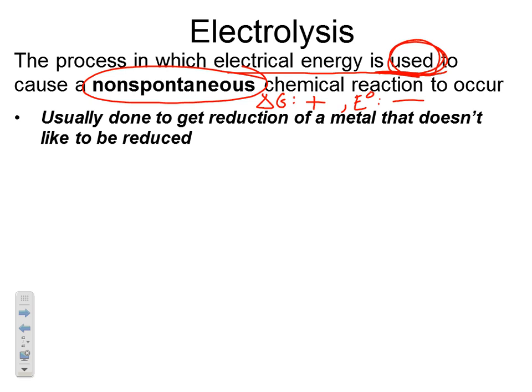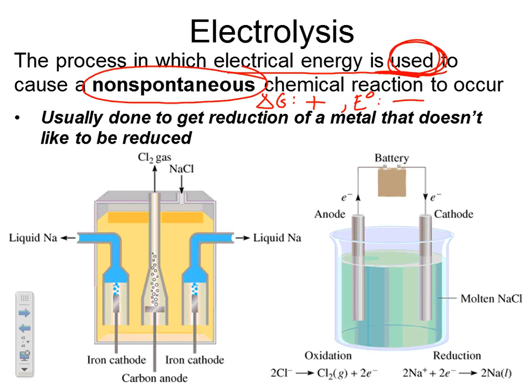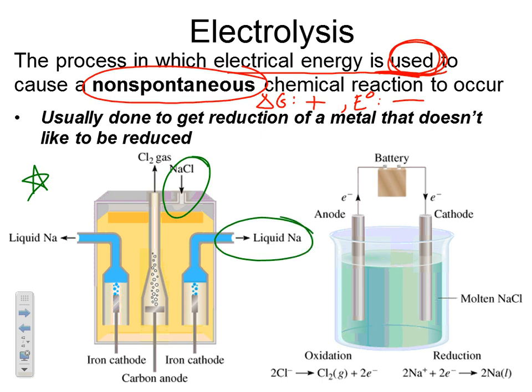Electrolysis is very commonly used to get the reduction of a metal that doesn't want to be reduced. If you have a metal that desperately wants to be oxidized but you need to reduce it, it's probably going to be non-spontaneous, and an electrolytic cell can help drive that process. For example, looking at this figure on the left, we're putting sodium chloride in and getting out liquid Na — so we're reducing Na⁺ to Na⁰. This is a ridiculously non-spontaneous process.